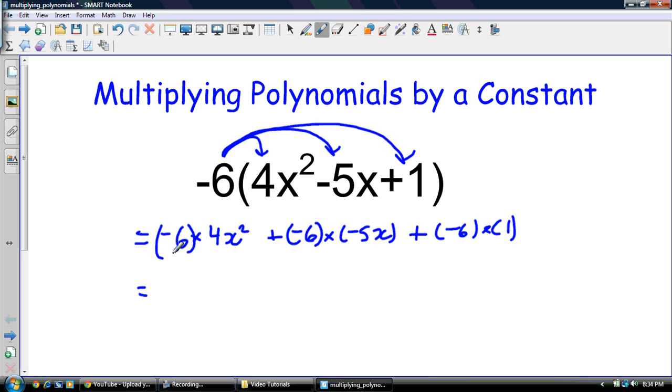So now, multiplying each one of these little monomials here, I have to multiply the coefficients. When I'm multiplying a polynomial by a constant, I just multiply the coefficients. So I have negative 6 times 4, that's negative 24x squared. Negative 6 times negative 5 is a positive 30, and negative times a negative makes a positive, so 30x. And then negative 6 times 1 makes a negative 6, so that's going to be negative 6.